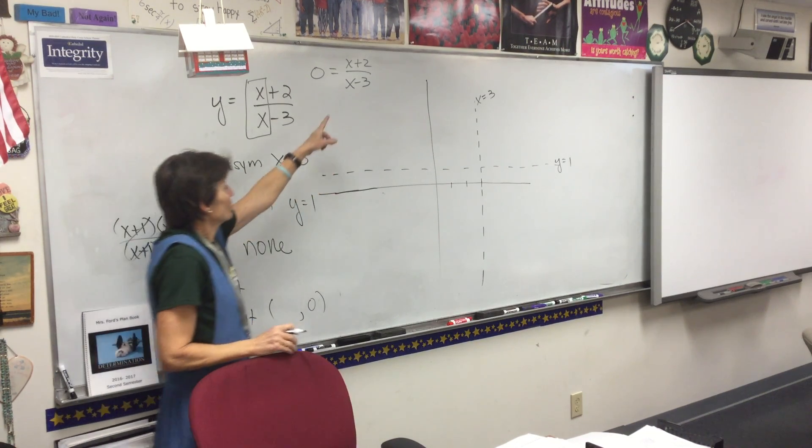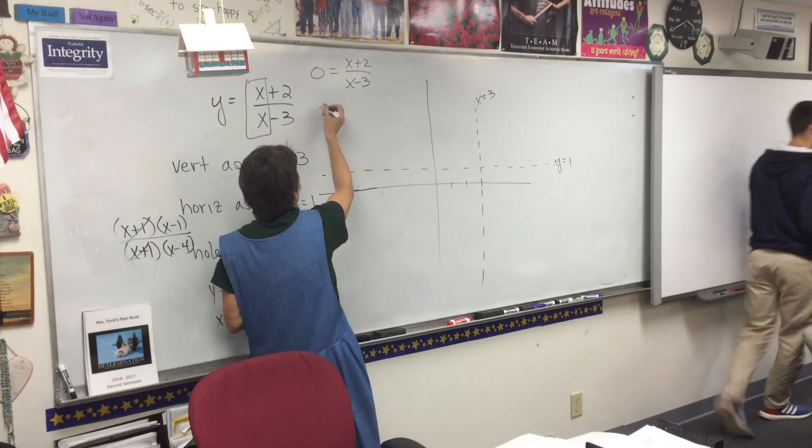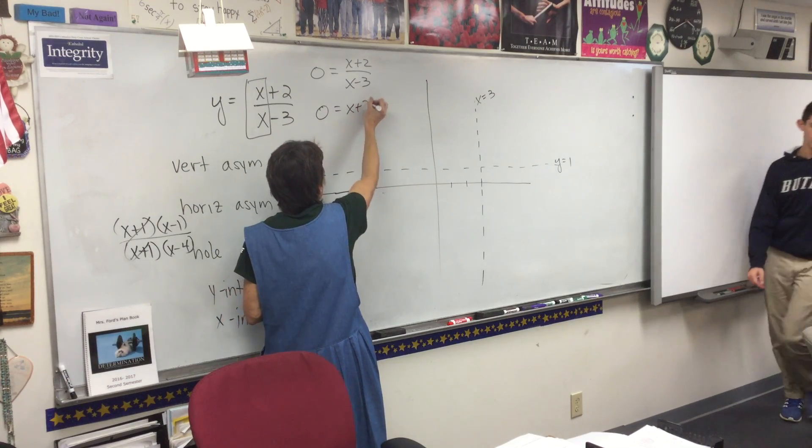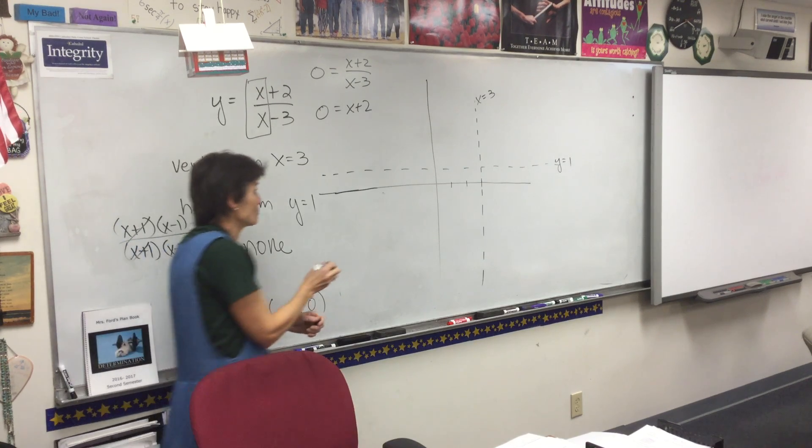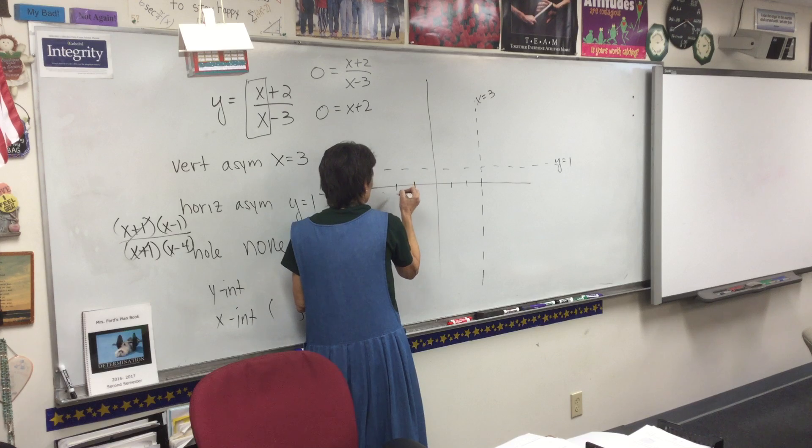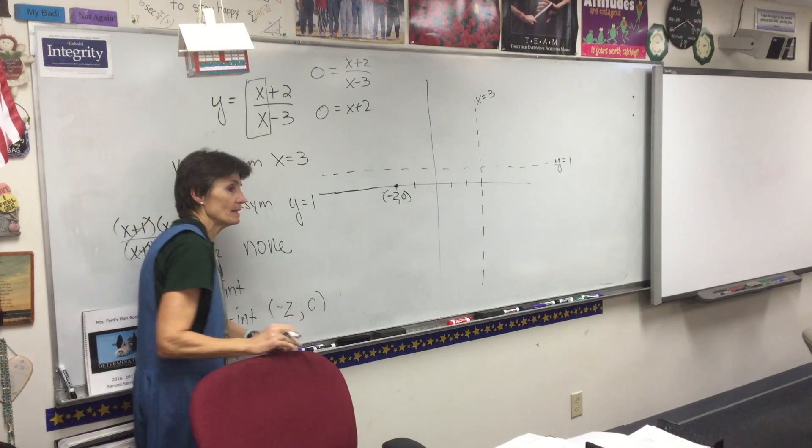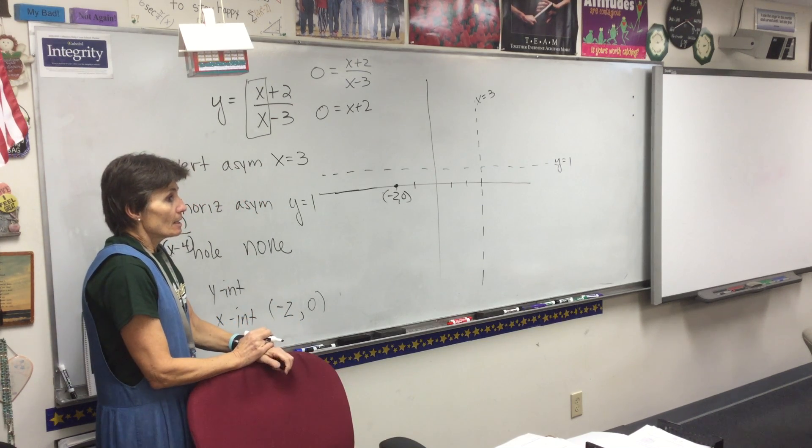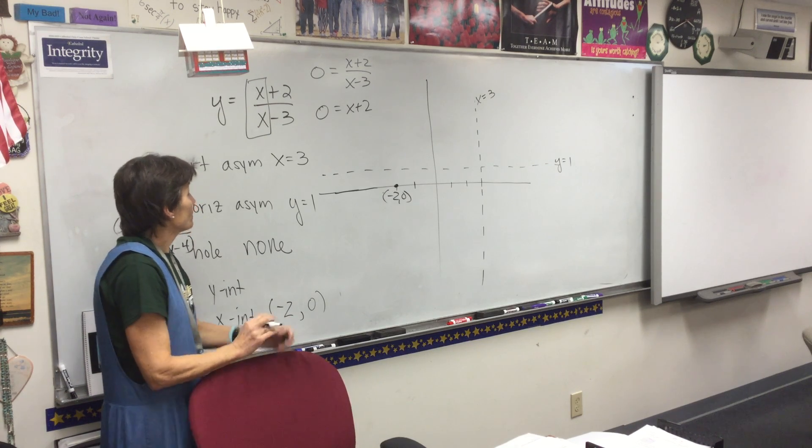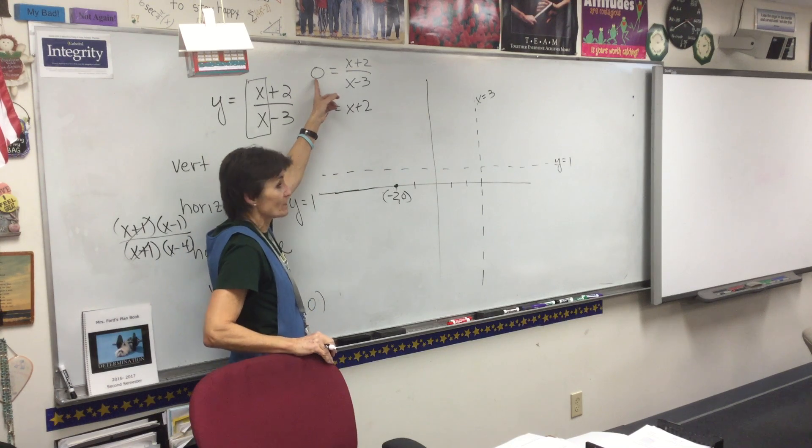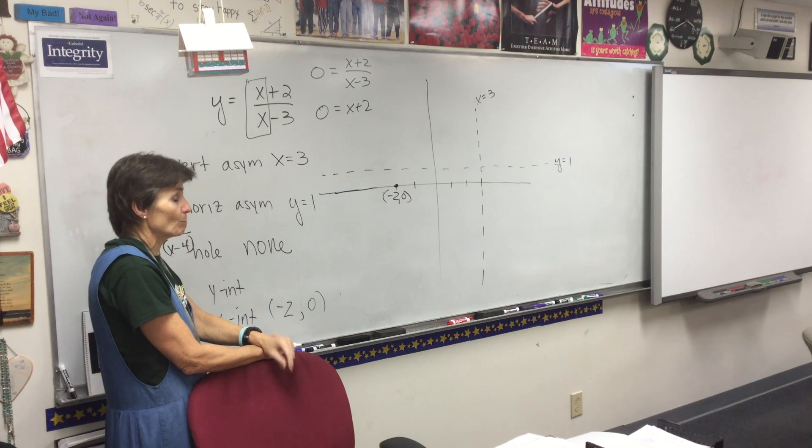So if y is zero, I have to solve this equation. What do I always do with my denominators? Multiply. Bring them over, right? But since that's a zero, it won't even matter, will it? So where is my x-intercept? At negative two. So my x-intercept is at negative two. It will always be the case that your x-intercept is going to come from the numerator because the denominator is always going to cancel out with that zero.